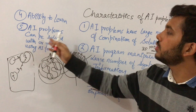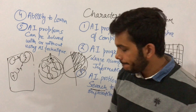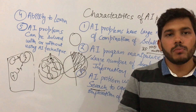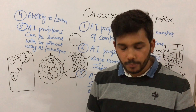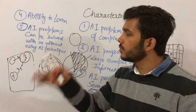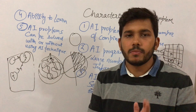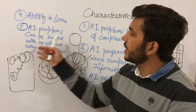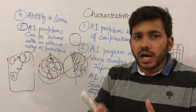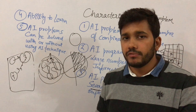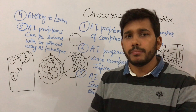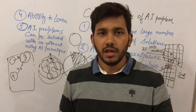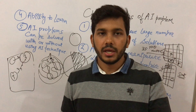The fifth point is that artificial intelligence problems can be solved with or without using AI techniques. For example, a problem like the missionaries and cannibals problem can even be solved without AI techniques because it is relatively easy and solvable after a possible number of steps. So AI problems can be solved both with or without using AI techniques.